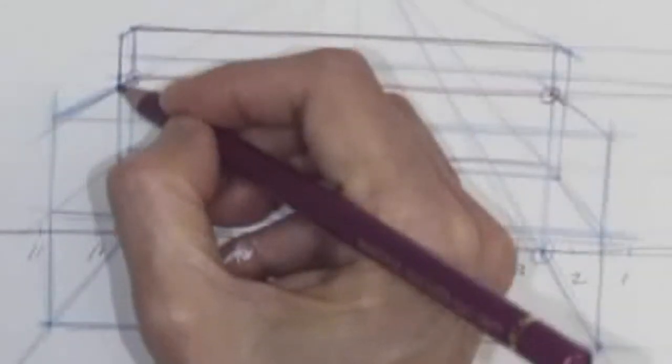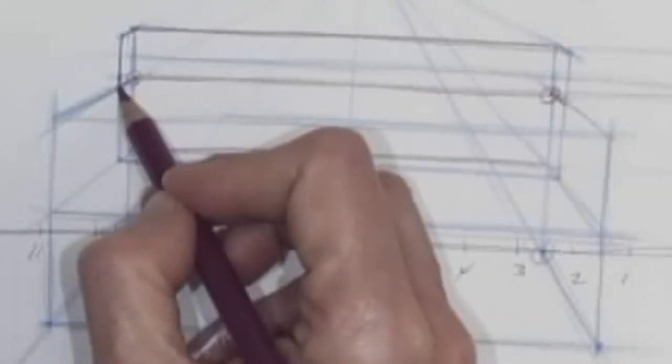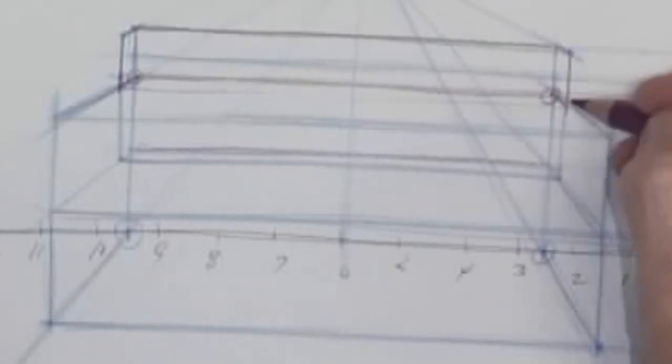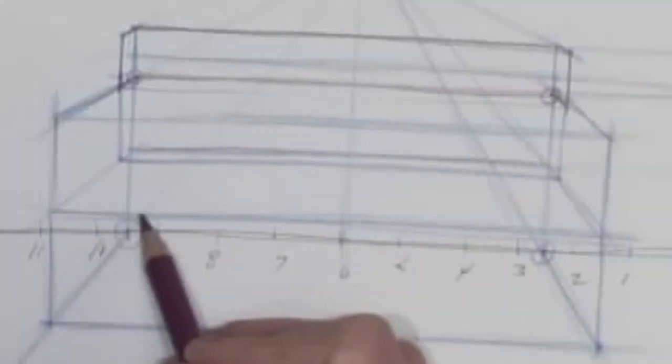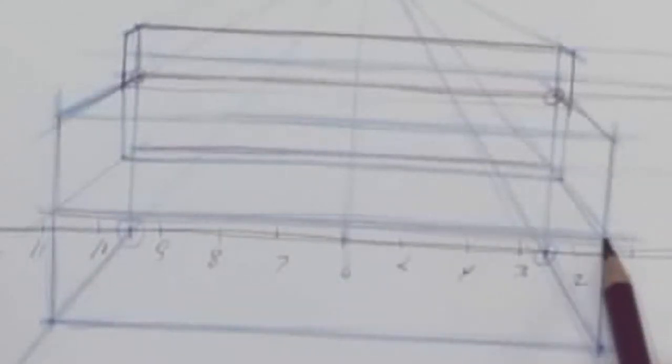So what have we got? We've got our back that's coming out like this and going across like this. There's our back. There's our arm. There's the top of our seat of our chair. That one and a half is the top of the seat.